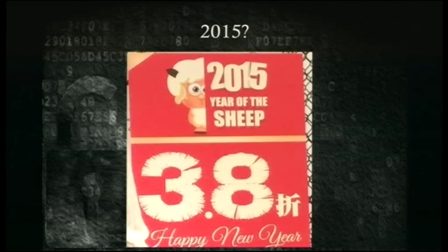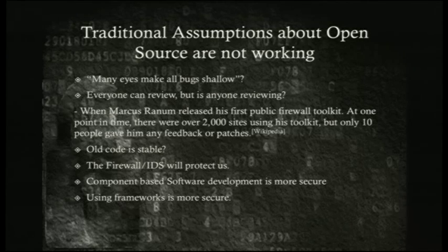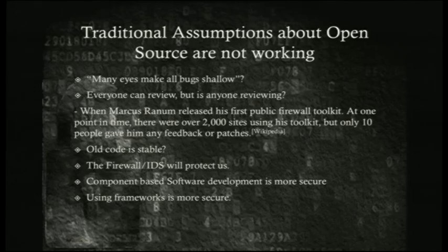I was stuck in the Hong Kong airport for 26 hours after missing a flight and saw a sign, so hopefully in 2015 we're not going to be sheep and we're going to make things better. Some of the traditional assumptions about open source aren't really working well. 'Many eyes make all bugs shallow' — it is valid to a large extent having source code available for everyone to see, but it begs the question: who's reviewing it? The best people to review code are the developers writing it and people familiar with the project.